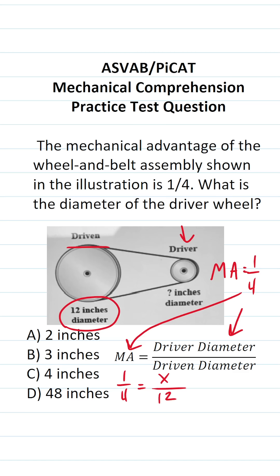All we have to do is solve this equation for X. And to do that, we're going to use cross multiplication. Four times X is four X. One times 12 is 12.